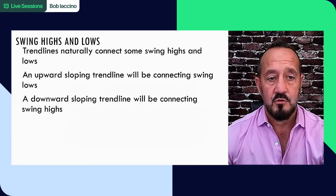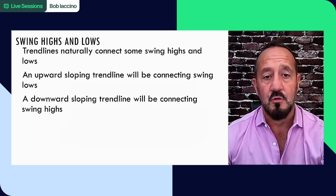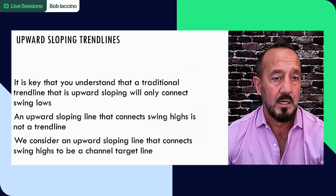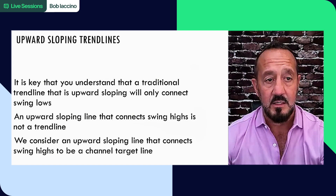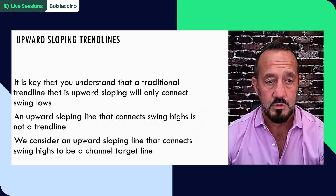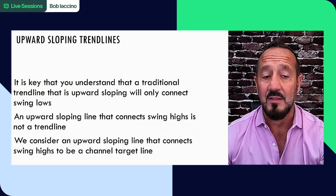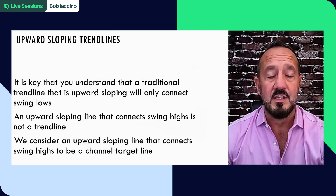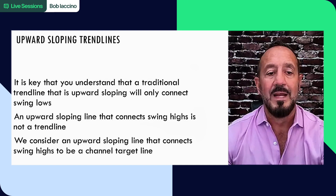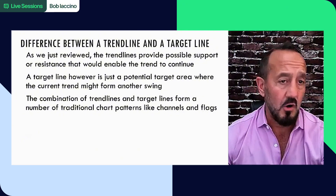Swing highs and swing lows. Trend lines naturally connect some swing highs and swing lows. An upward sloping trend line will be connected to swing lows. A downward sloping trend line will be connected to swing highs. It is key that you understand that a traditional trend line that is upward sloping will only connect swing lows. And an upward sloping line that connects swing highs is not a trend line. That shows itself in channels. We consider an upward sloping trend line that connects swing highs to be a channel target line.